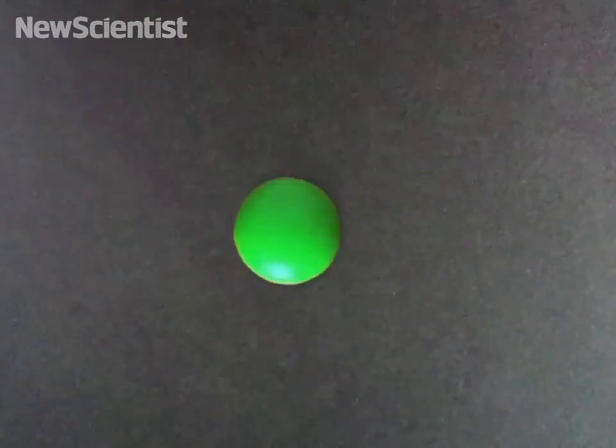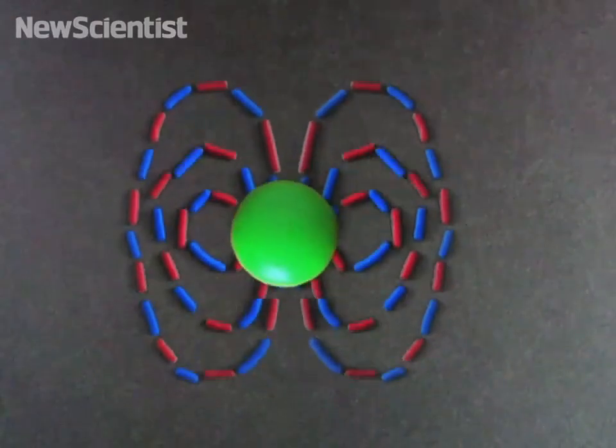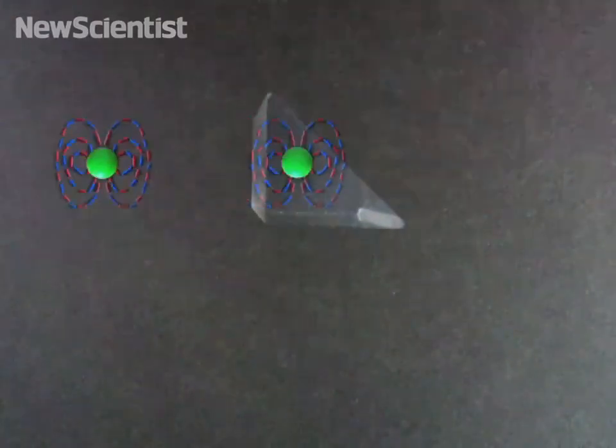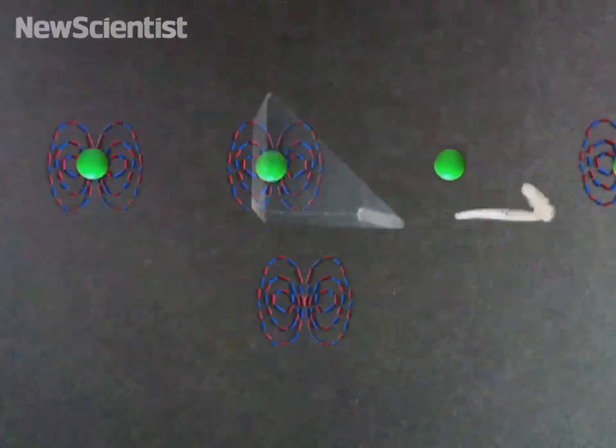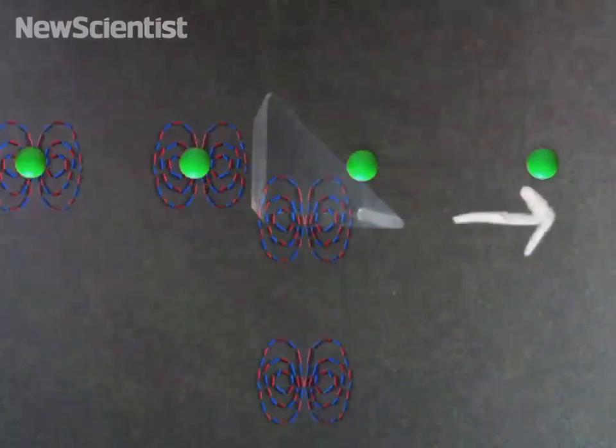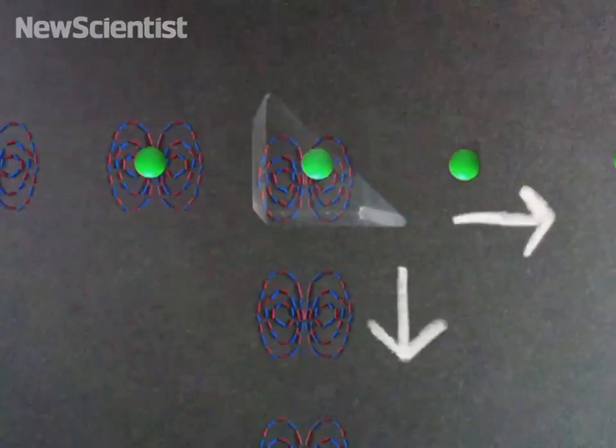A neutron has a magnetic field. And yet, if you send a bunch of neutrons through a beam splitter, sometimes the neutron goes this way, while its magnetic field goes this way.